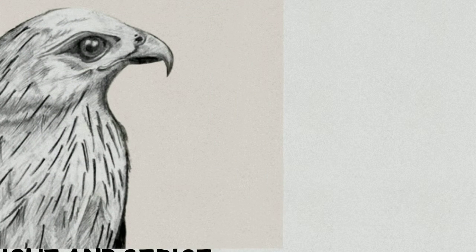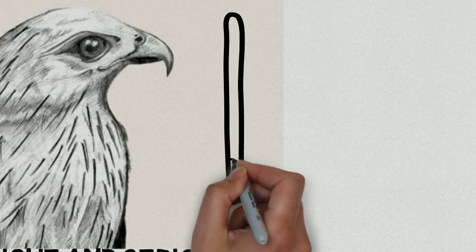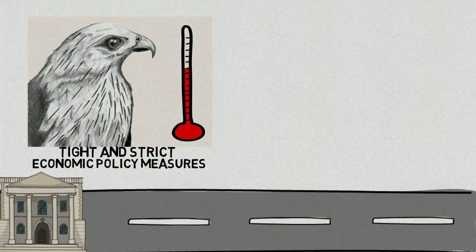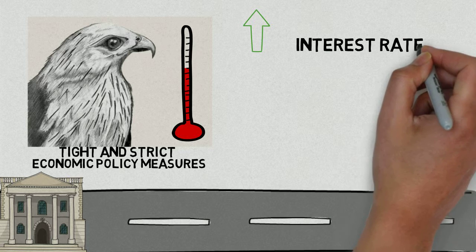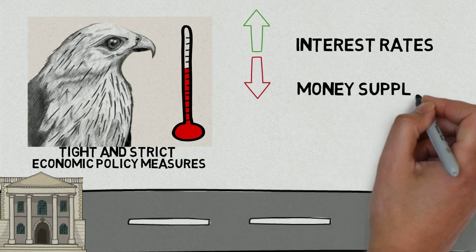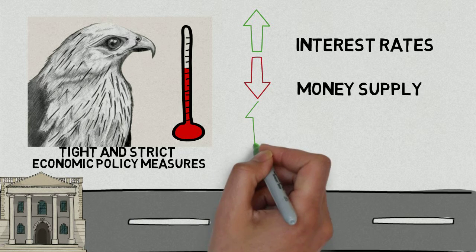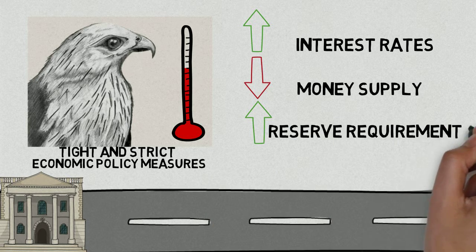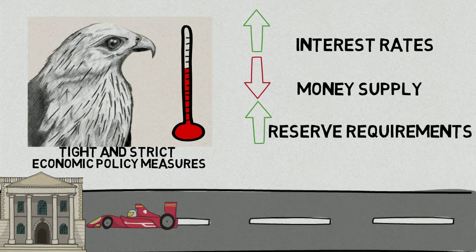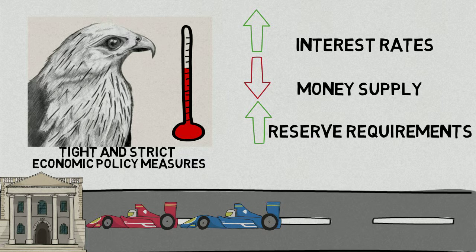This situation usually occurs when an economy is growing too fast. To prevent the economy from overheating and to prevent financial bubbles, the government or the central bank has to focus on some prudent steps. These include raising interest rates, decreasing the money supply, and increasing reserve requirements at financial institutions. This helps cool off economic activity to manageable levels — like using the brakes on a high-speed sports car to prevent accidents.